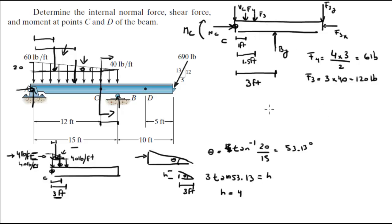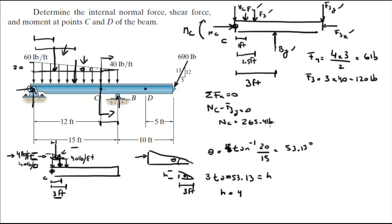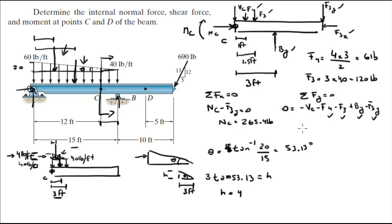With all forces known, solve for NC, VC, and MC. Sum of forces in the x-direction equals zero: NC minus F3X equals zero, so NC equals F3X equals 265.4 pounds. Sum of forces in the y-direction equals zero: VC minus F4 minus F3 plus BY minus F3Y equals zero. Solving gives VC equals 648.6 pounds.